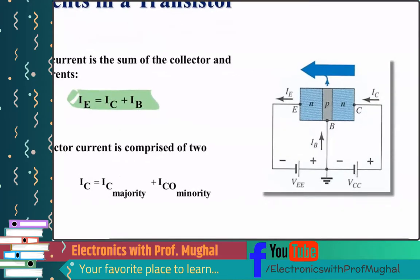So again, if you look at this graphic, it's an NPN transistor. Here is your emitter terminal, here is your base, and here is your collector terminal.